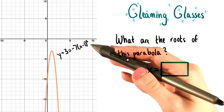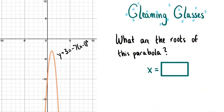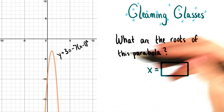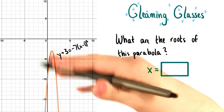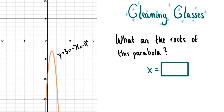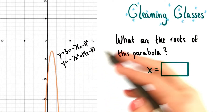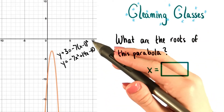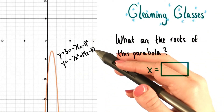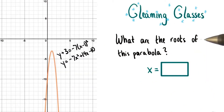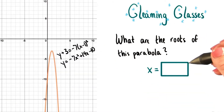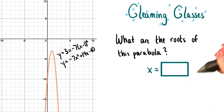Now that you've worked so hard to figure out the vertex form of our equation, I've decided to show you the graph. Now I'll actually write the equation for the parabola in both forms, vertex form and standard form. And I'd like you to tell me what the roots of this parabola are. Remember to simplify and write the answers in as compact a way as you can.